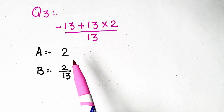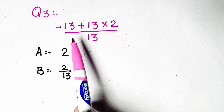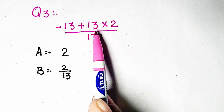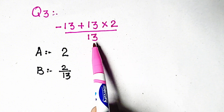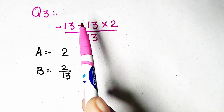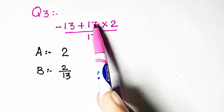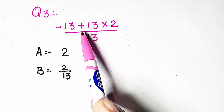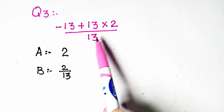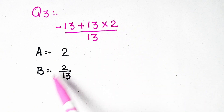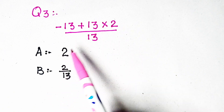Now come to question 3: minus 13 plus 13 times 2 divided by 13. A common mistake is cancelling minus 13 with plus 13, giving an answer of 2/3 — but that is wrong.